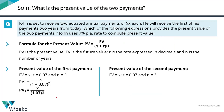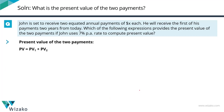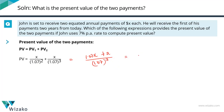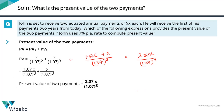To summarize: the present value of the first payment is X divided by 1.07 squared, and the present value of the second payment is X divided by 1.07 cubed. The total present value of both payments is the sum of these two. Taking 1.07 cubed as the common denominator, the numerator of the first term becomes 1.07X, giving us (1.07X + X) / 1.07³, which simplifies to 2.07X divided by 1.07 cubed. This is the present value of the two payments received two and three years from now. Choice B is the correct answer.